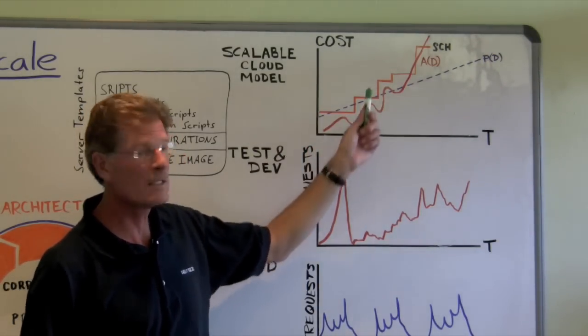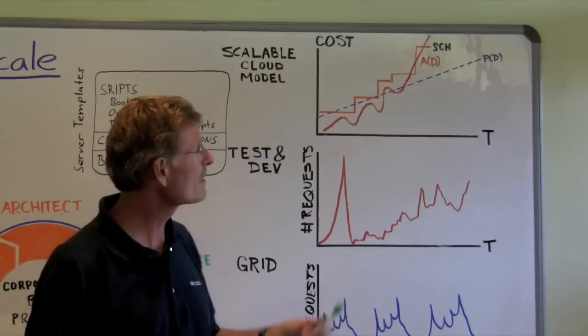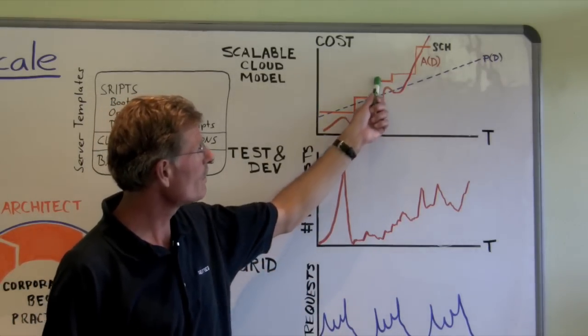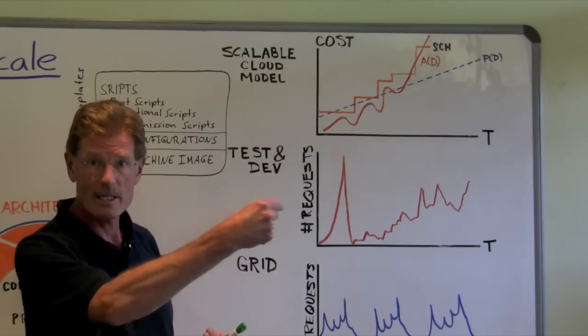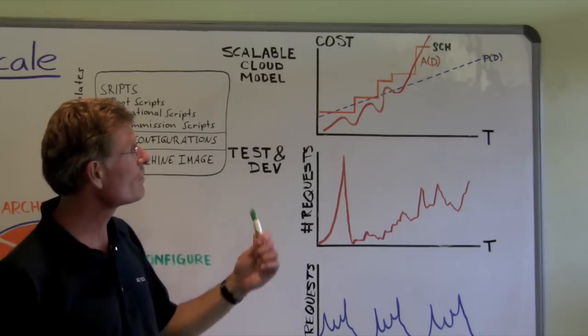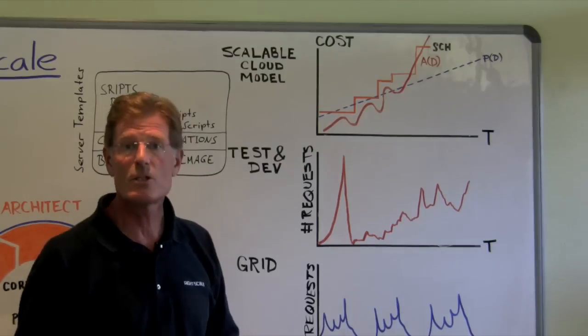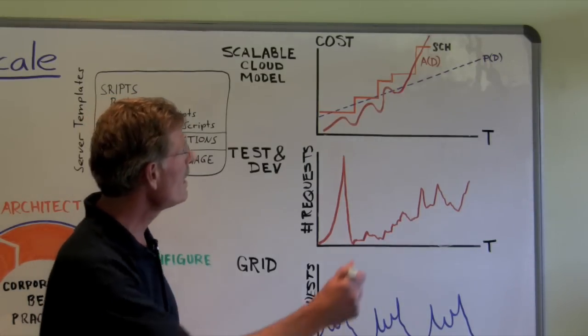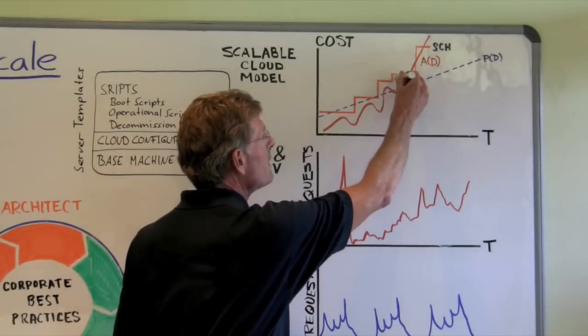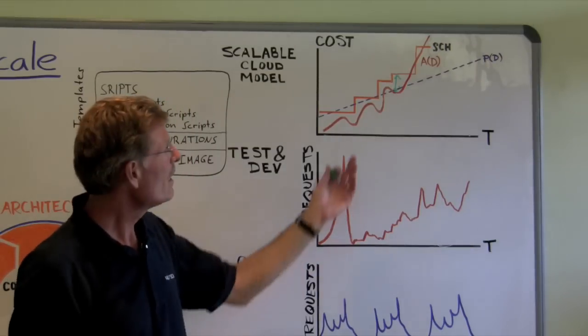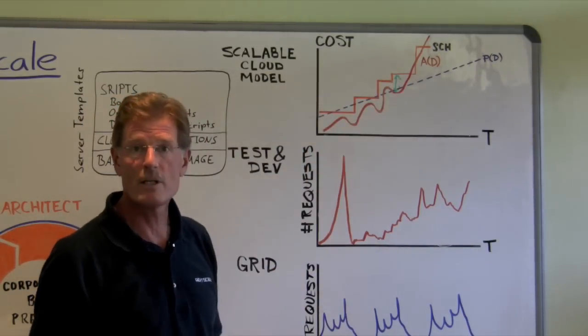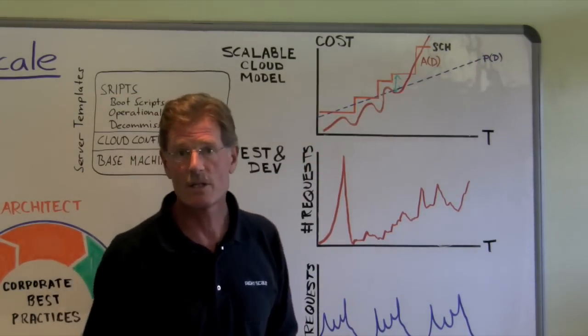You can see that demand is increasing on a variable flexible basis. The infrastructure build out is marching up on this orange blocked line. Every time you buy or rent new infrastructure, it's there. And what happens is two things. First is this kind of problem where, at this point in time, you've got an opportunity cost. You've built out more infrastructure than you need, so you're paying for something you're not using.